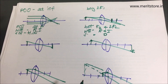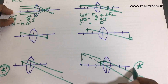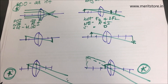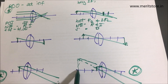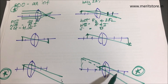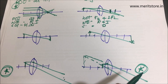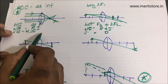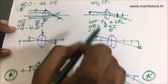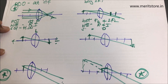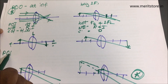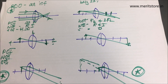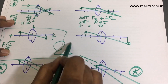Revise all six cases: mention the nature, size, and position of the image for each. In exams, the virtual/erect case and the infinity case are most likely to be asked since they are different. Every ray diagram must have directional arrows on both sides of the lens, the label 'principal axis' with an arrow, and a box with position, nature, and size of the image written in full — not abbreviations. Write position of the image, nature of the image, and size of the image.